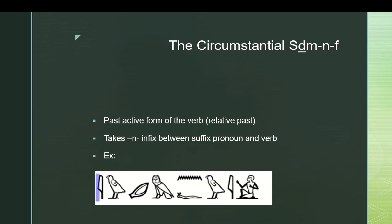And here I've taken that same sentence and put it in the past using a form known as the circumstantial sdjm-n-f. The n-infix between either the suffix pronoun or the nominal subject and the verb puts it in the past active. That's really the only difference. So, sdjm-n-f wi would be he heard me rather than he hears me. But otherwise, the same.